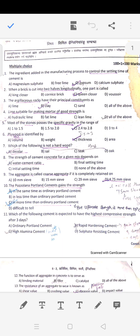Question number one: The ingredient added in the manufacturing process to control the setting time of cement is gypsum. Gypsum controls the setting time.